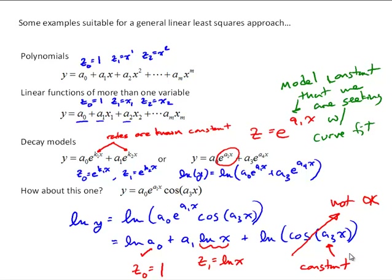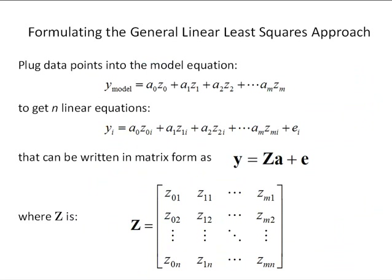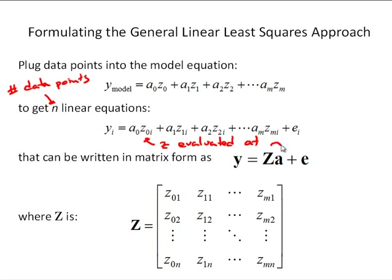Be aware of that when evaluating whether a mathematical model is suitable. To implement the general linear least squares approach, the first step is to plug the data points into the model equation. Given the general model y_model as a linear combination of basis functions, we get n linear combinations by plugging in the data points, yielding y_i equal to a0*z0_i plus ... with the basis function z evaluated at data point x_i. Since this won't be an exact fit, we introduce a residual for each data point.